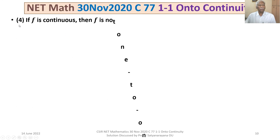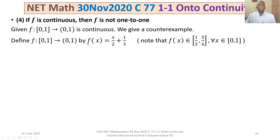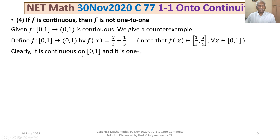Lastly, option 4: if f is continuous, then f is not 1-to-1. This is not necessarily true. We give a counterexample: define f(x) = x/2 + 1/3. Note that f(x) ∈ [1/3, 5/6], which is contained in (0,1). This is a straight line, so it is obviously continuous on [0,1] and 1-to-1.